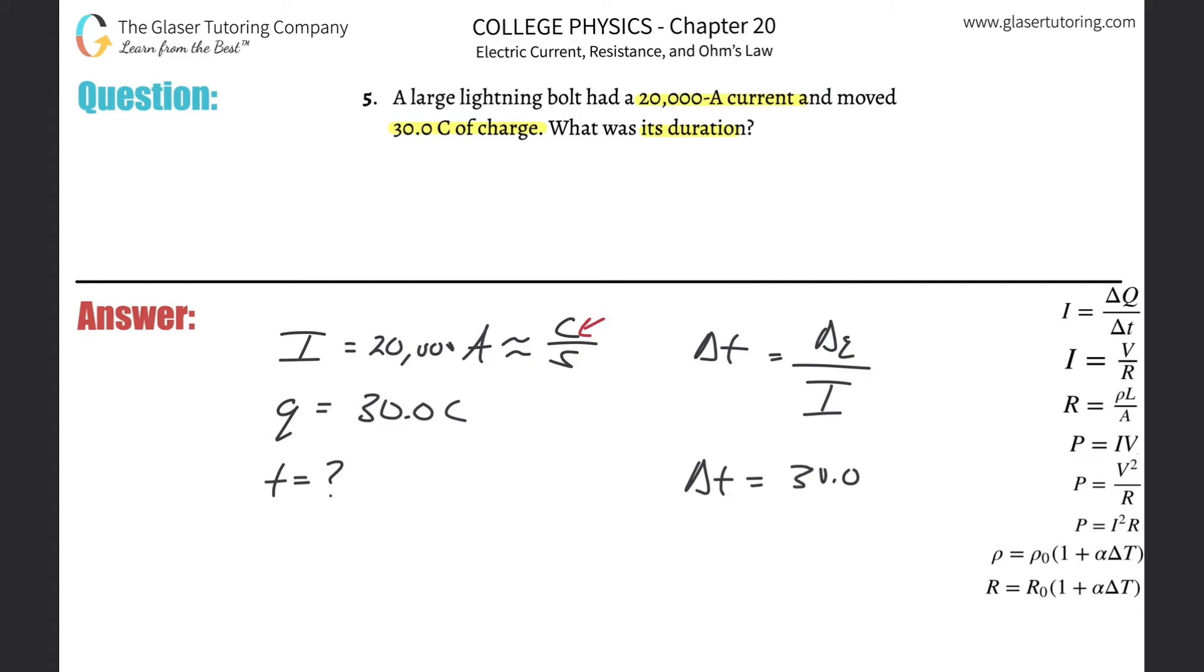So in other words, it's going to be 30 divided by the 20,000. Make sure you have all the standard units, charge in coulombs, current in amps or coulombs per second, they're equivalent.